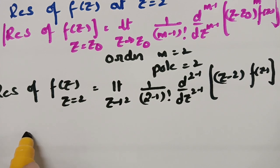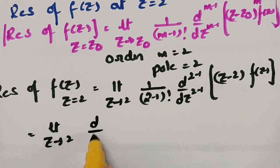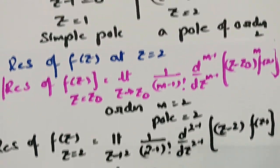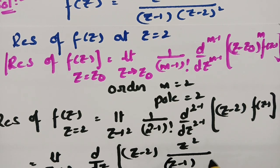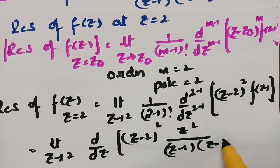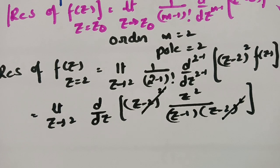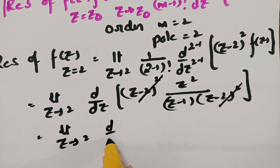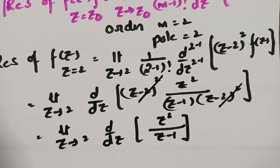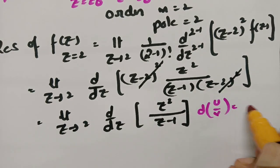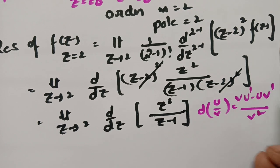We need to differentiate z²/(z-1) using the quotient rule (u/v)' = (v·u' - u·v')/v². Here u = z² and v = z-1, so u' = 2z and v' = 1. Applying the formula: d/dz [z²/(z-1)] = [(z-1)·2z - z²·1] / (z-1)².